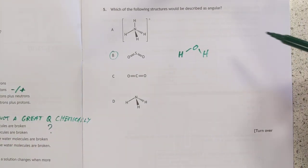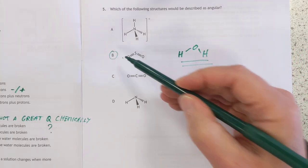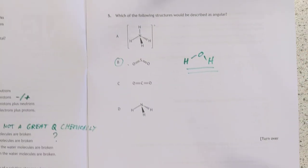Number five, angular. The classic angular molecule is water, and the only one that resembles water there is B, sulfur dioxide.